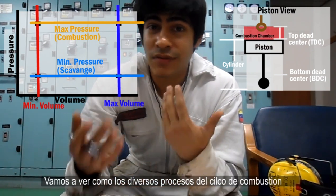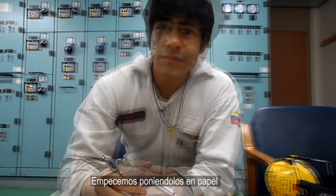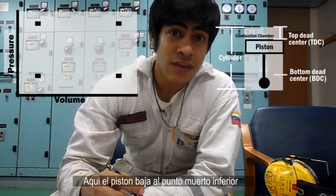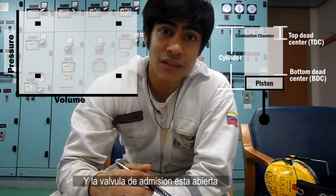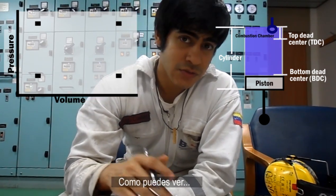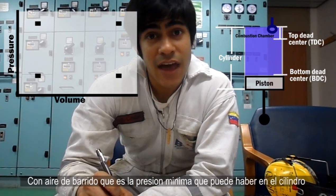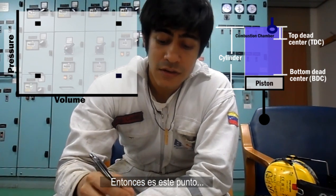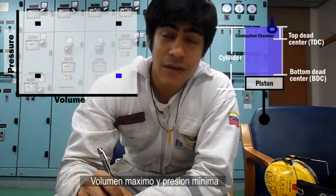Let's see how the different processes of the combustion cycle affect this diagram. Let's begin putting this process on paper. The first process is the admission stroke. In the admission stroke, the piston goes to bottom dead center and the inlet valve is open, allowing scavenge air to enter the cylinder. So as you can see, it's at the point of maximum volume, and scavenge air is the minimum amount of pressure that we can have inside the cylinder — so it's this point: maximum volume and minimum pressure.